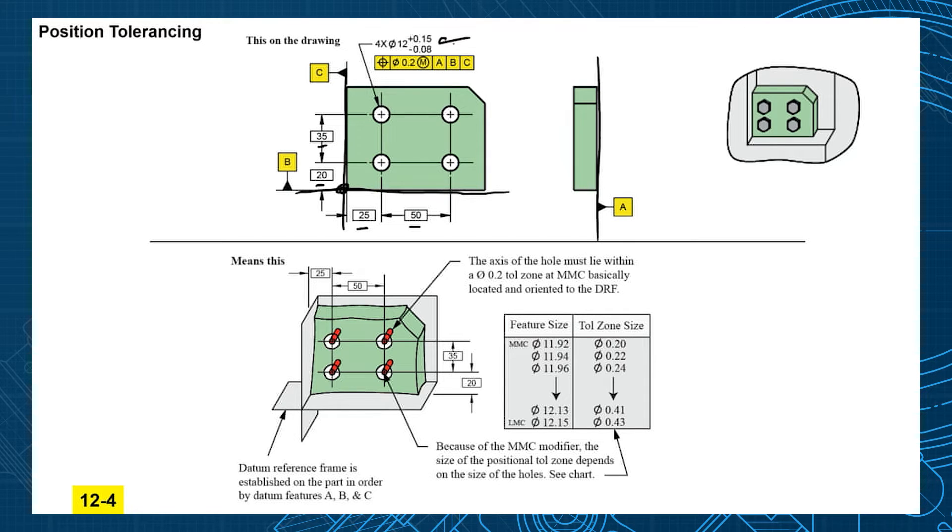Now when I say this hole has two tolerances, this is your size tolerance, tells you how big and small it can be, that's your MMC and LMC, and then it has a position tolerance of 0.2.